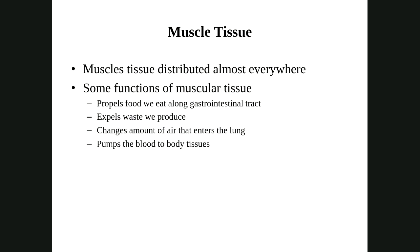Muscle tissue's main function is to contract and produce movement. Some of that movement can produce different types of reactions: propelling food, expelling waste, changing the amount of air in the lungs, pumping blood. A lot of times when we think about movement, we just think about moving our body around in our environment, but there's a lot going on internally as far as our movements.